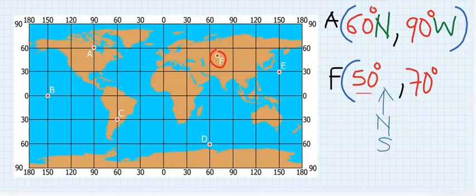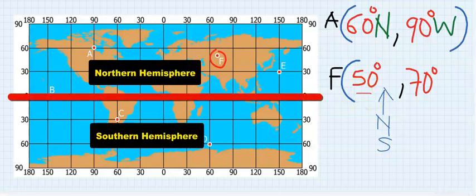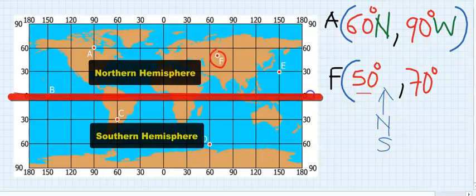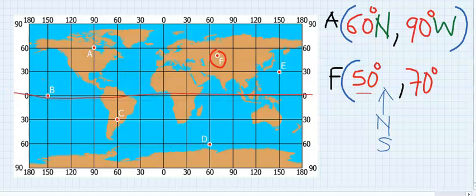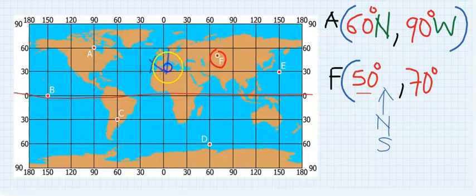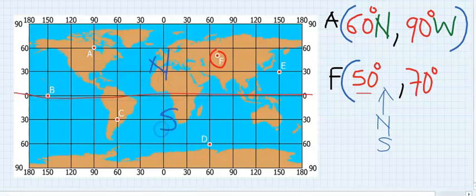Next will be north or south. However, this is latitude, and latitude is split at the middle from the equator. From the equator, this is the north and this is the south. And this point is on the northern part, so here will be north.